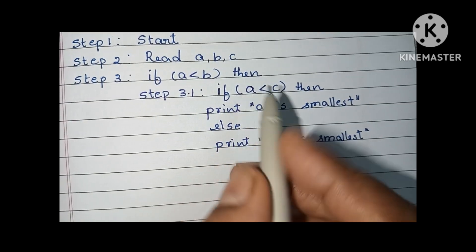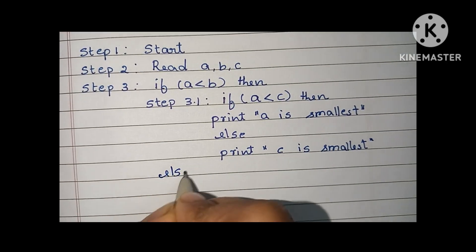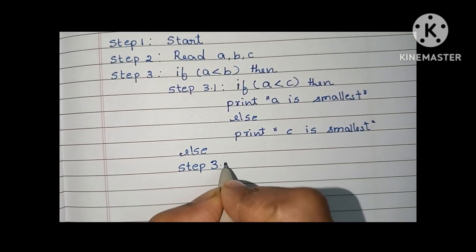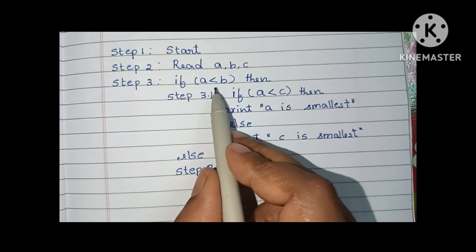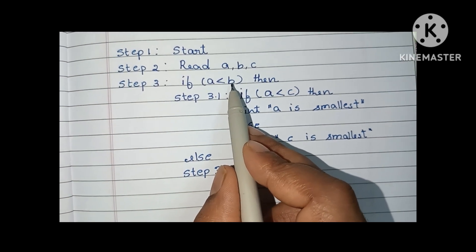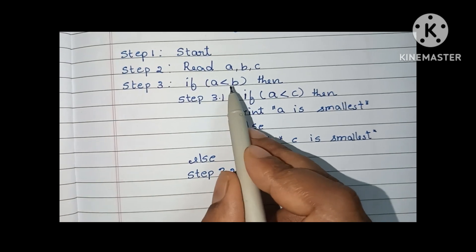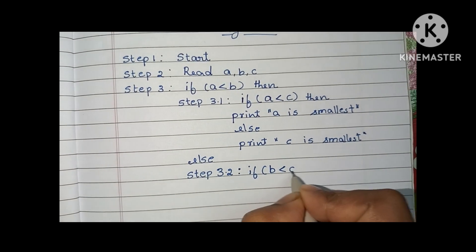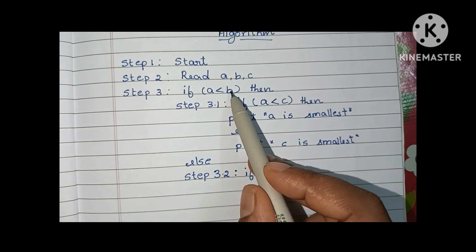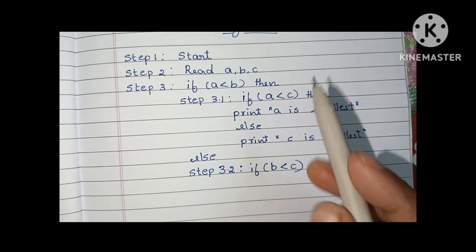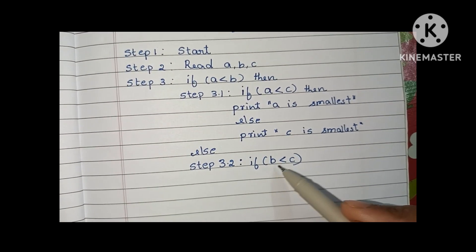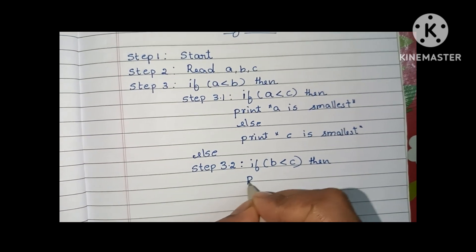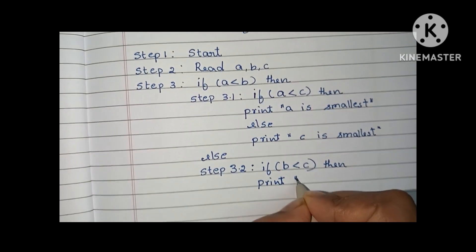If a less than b is false, it means b is lesser than a — b is smaller than a. So we execute step 3.2. Here we have to check if b is less than c. If this condition is true, we print 'b is smallest.'